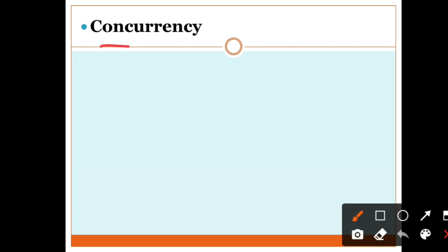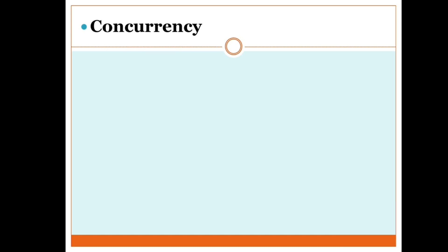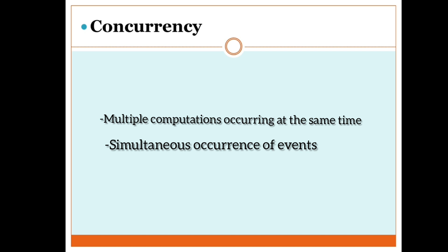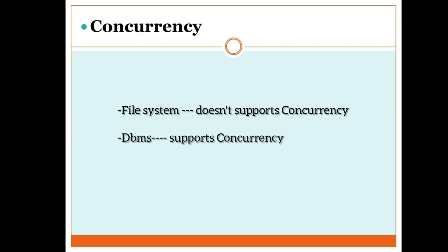The next point is concurrency. Concurrency simply means multiple computations occurring at the same time — the simultaneous occurrence of events. For example, on IRCTC, lakhs of people are doing bookings or transactions at the same time and accessing the database through different DBMS operations like insertion, deletion, and updation. This is not possible in a file system because there is no protocol for concurrency — concurrency is not at all possible in a file system since data is stored in an unstructured form.